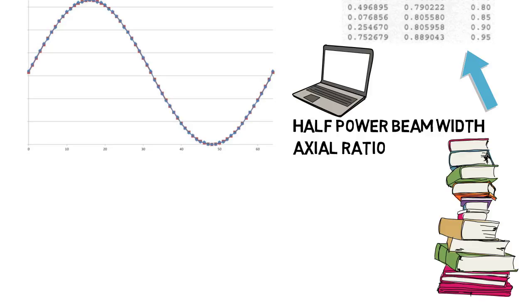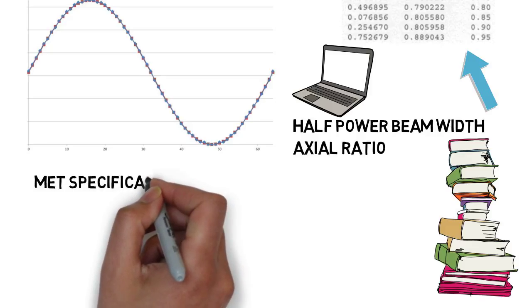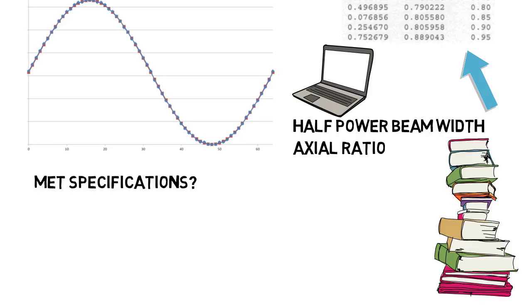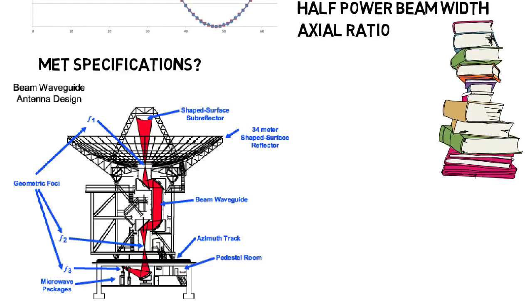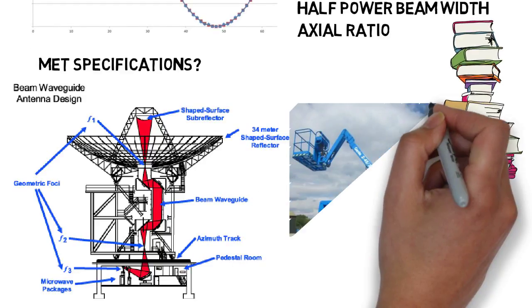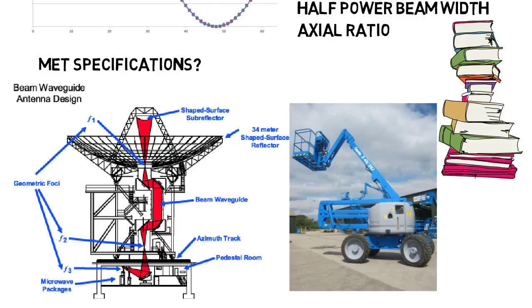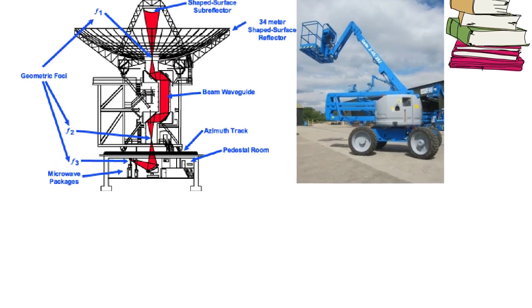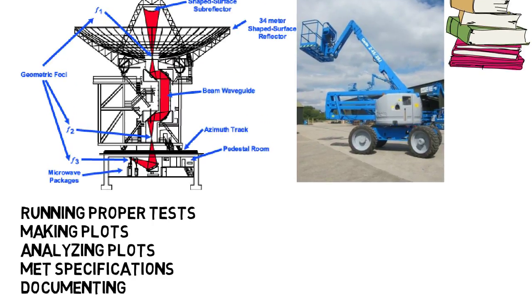After I made the plots, I had to determine whether the parameters met specifications. Like the gain of the antenna had to be within a certain number, or the axial ratio had to be less than a certain number. Then we put the antenna in another testing area where it was on a very high up platform, and I got to go up in one of those lifts to make sure all the cables and hardware was set up properly. There were many weeks of this, and we tested one antenna so many different ways, in different environments, and with different methods. These months were about running proper tests, making plots, analyzing plots, making sure the antenna met specifications, and then documenting everything we had done.